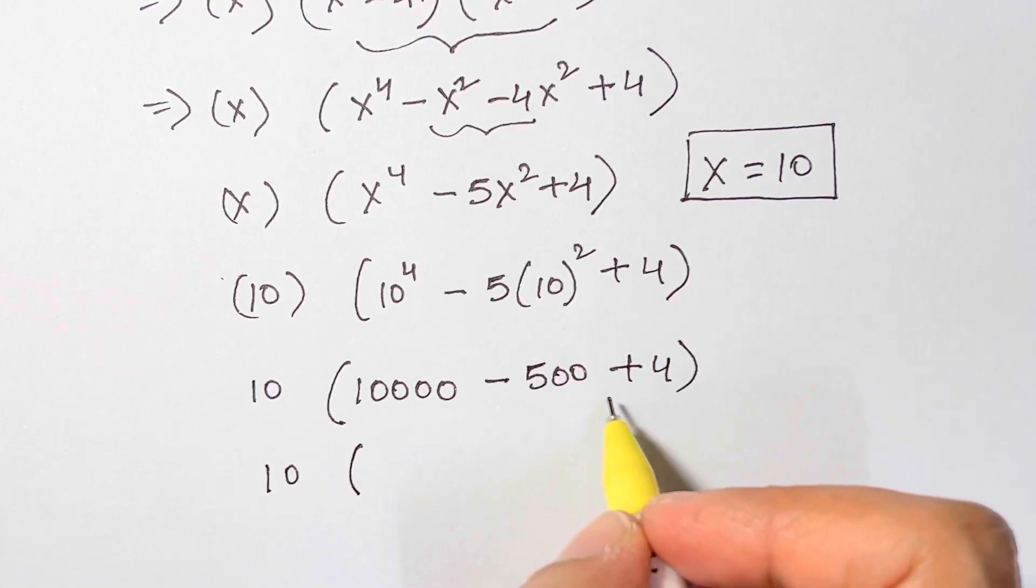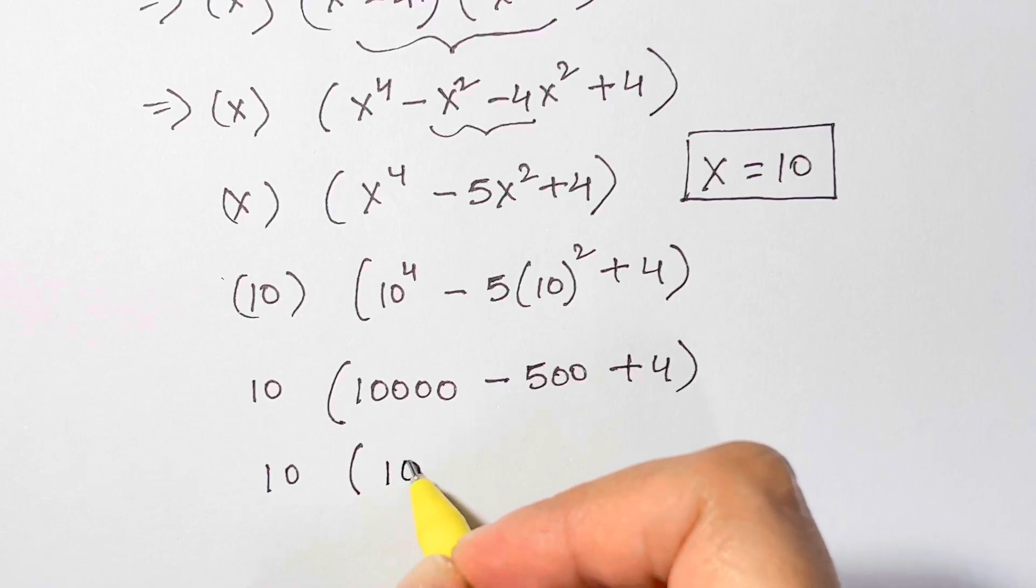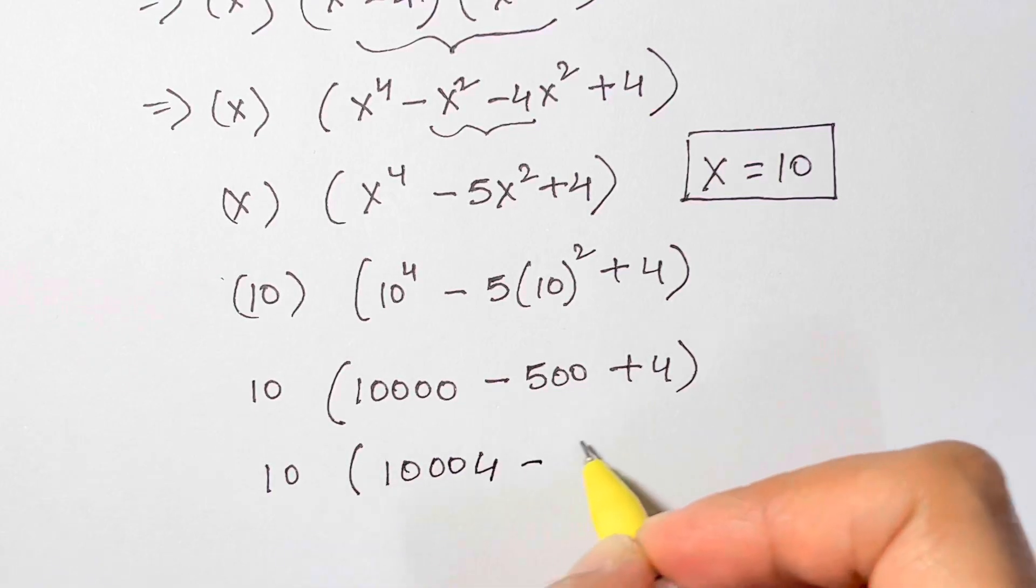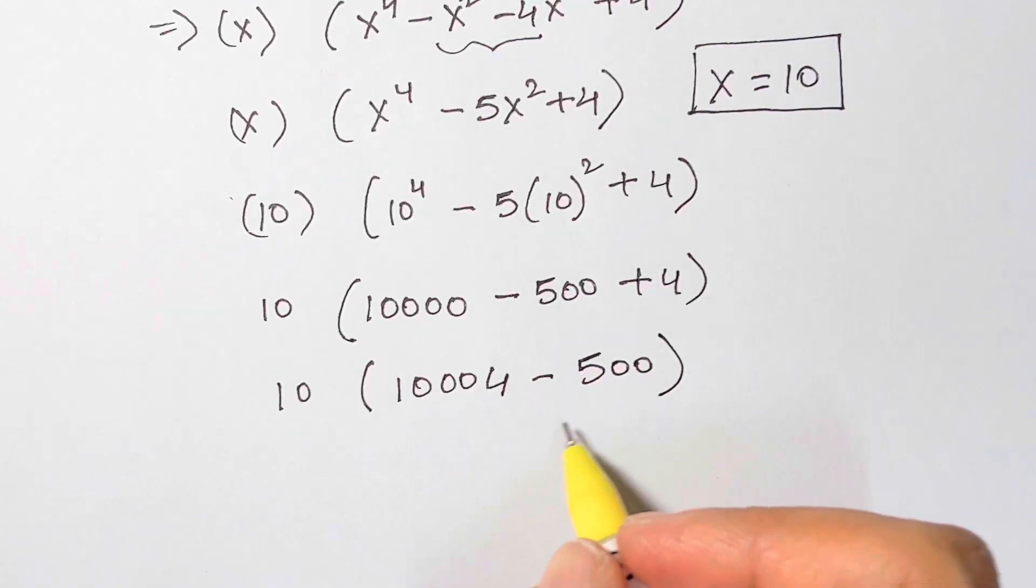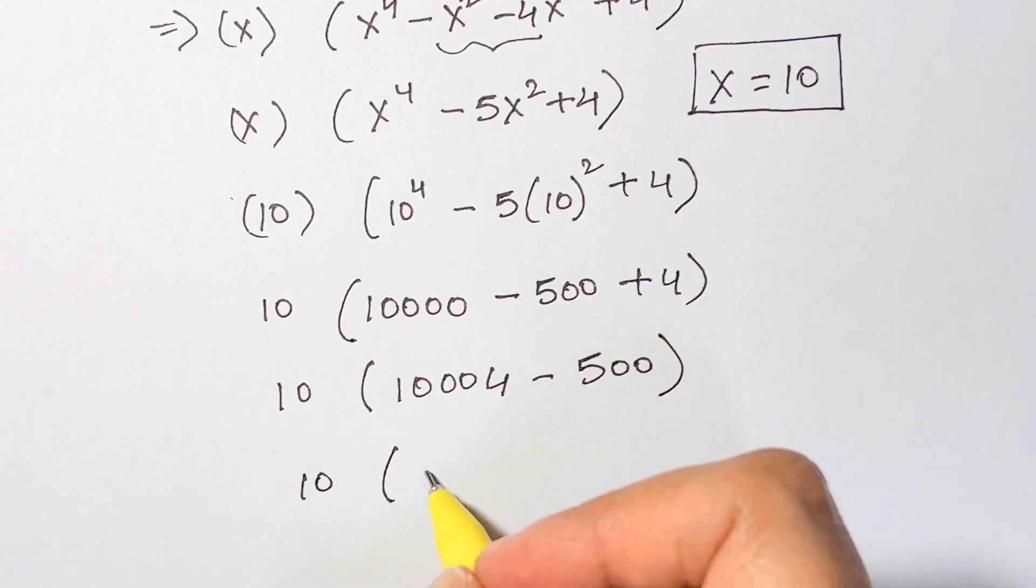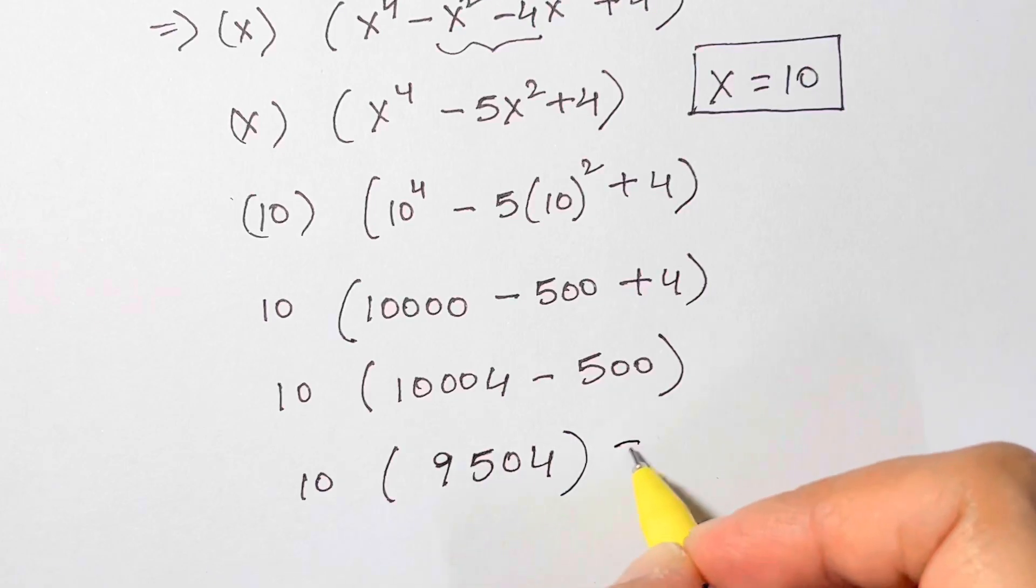And that's so easy to calculate. You have this, let's add them up: 10004 - 500. How much is 10004 - 500? Just subtract, so you have 9504.